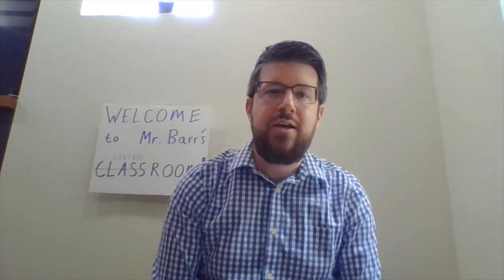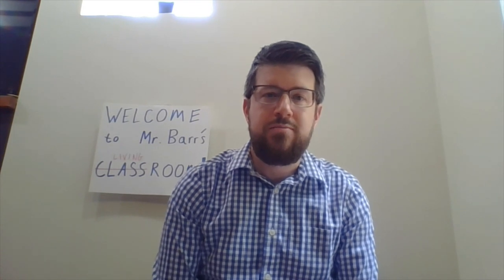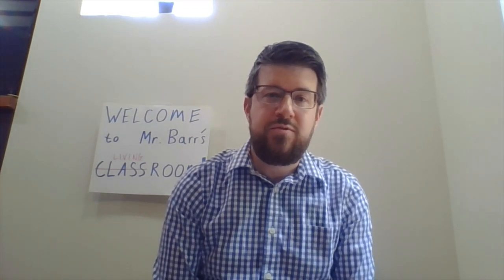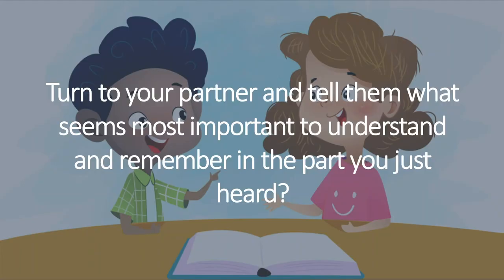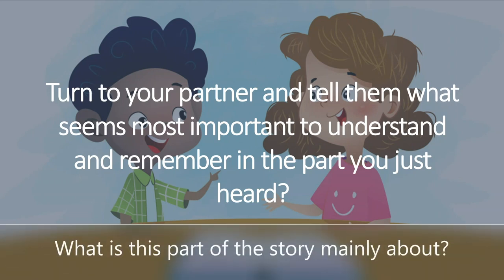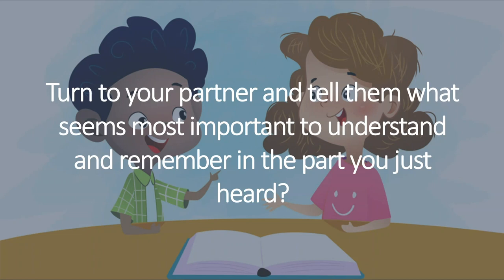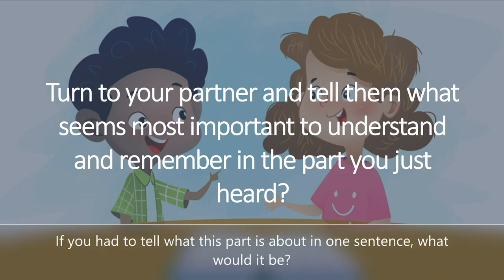Turn to your partner again and tell them what's the most important idea in the part of the story we just read. Remember, you can use whatever language you feel most comfortable with and use our prompt — 'The reason I think that is' — to back up what you say. If you don't know what to say, you can ask yourself: What is this part of the story mainly about? Or, if you had to tell what this part is about in one sentence, what would it be?